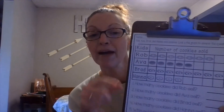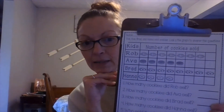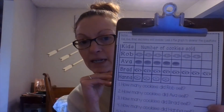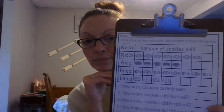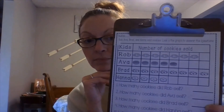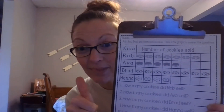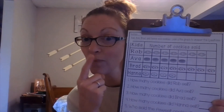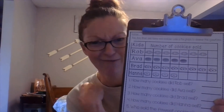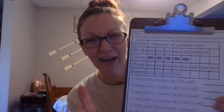All right, what about Brad? I'll give you a second to check all of Brad's. How many cookies did Brad sell? Did you say eight? Eight. So Brad sold eight cookies, and Hannah sold four cookies. You're right. You got this.